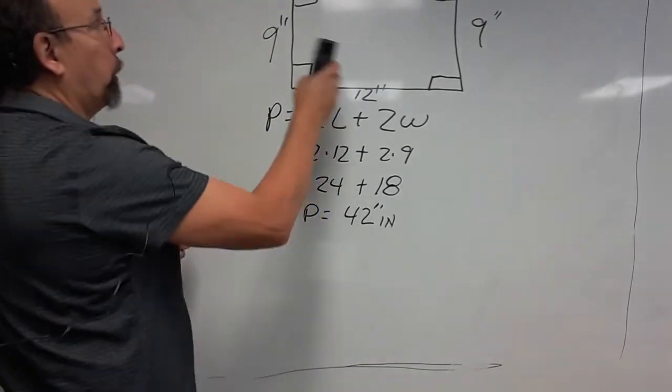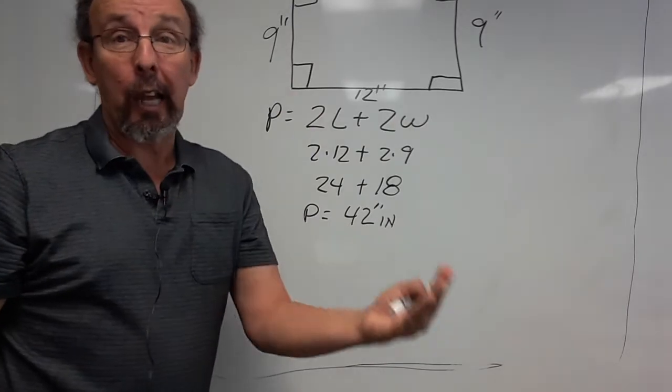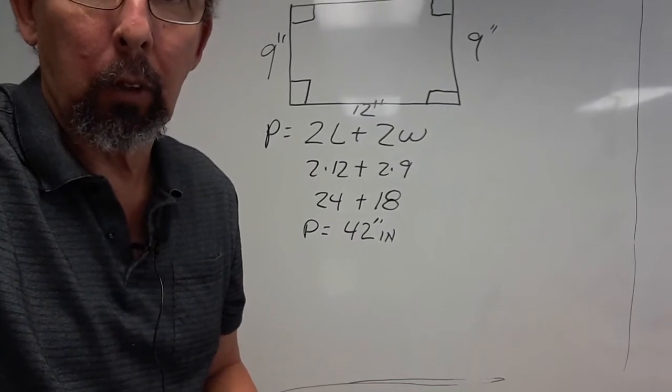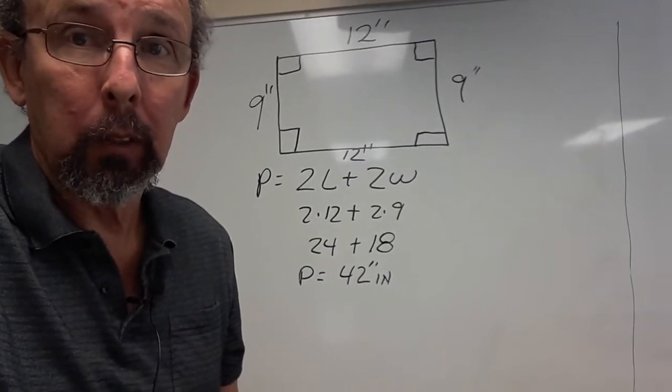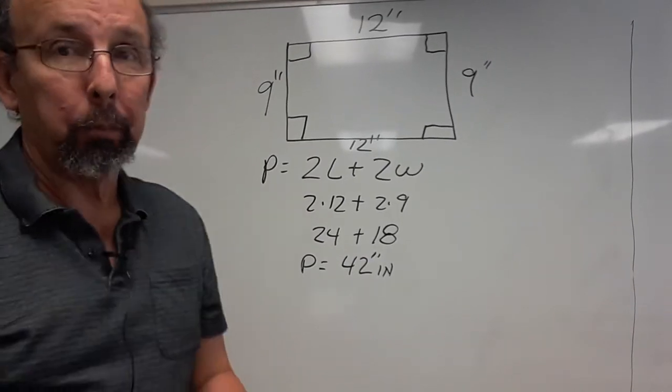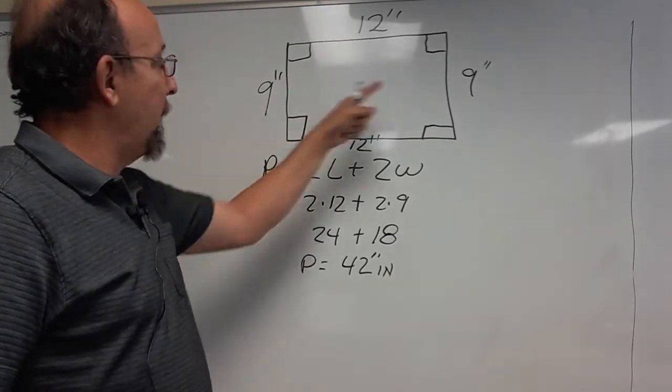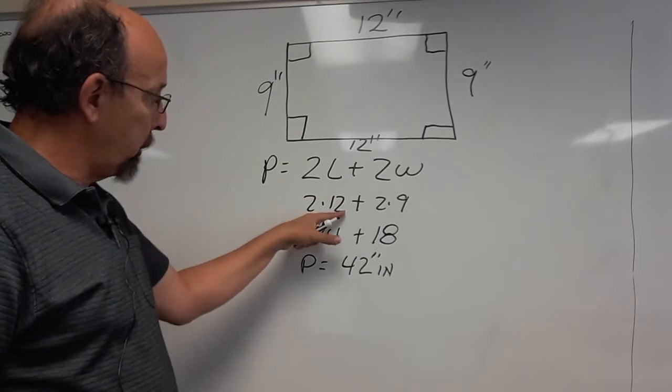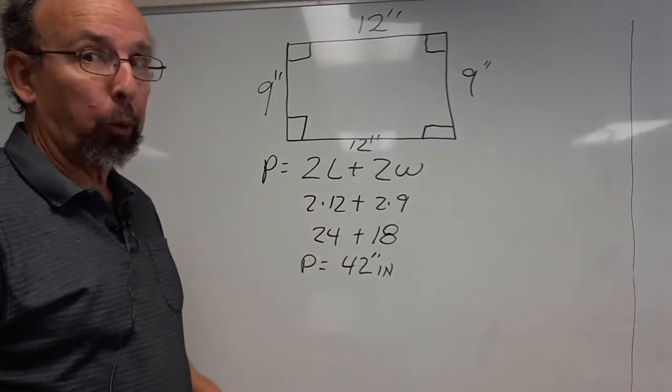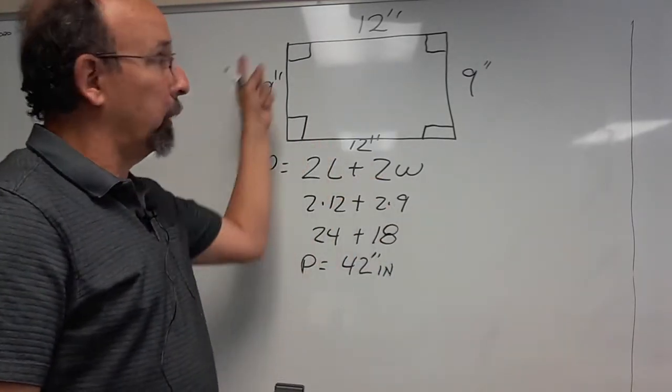Now, remember, the perimeter means distance around it. So if you forget the formula, just add the four sides together. 12, 12, 9, 9. 2L plus 2W. 2 times 12, 2 times 9, 24, 18. Add them together. There's your perimeter. Distance around it. If you forget the formula, just add the four sides together.